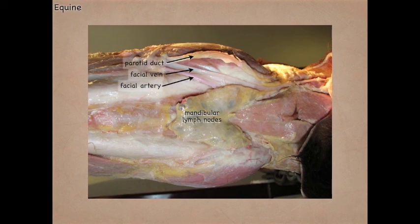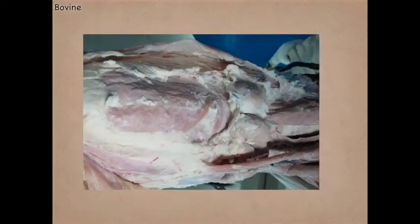It's important to remember that these are the mandibular lymph nodes in the horse, whereas in the bovine in that same region we have the mandibular salivary glands. We'll come back to those in a little bit.